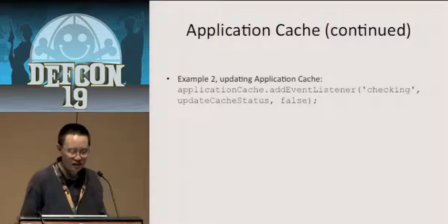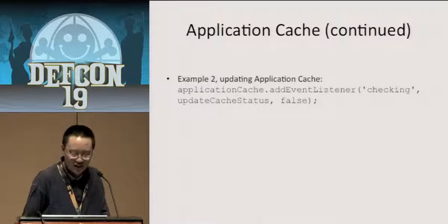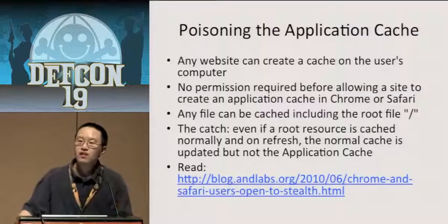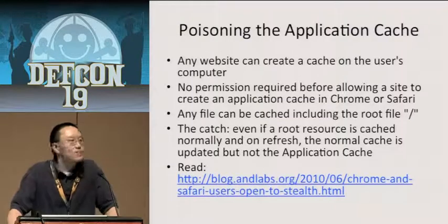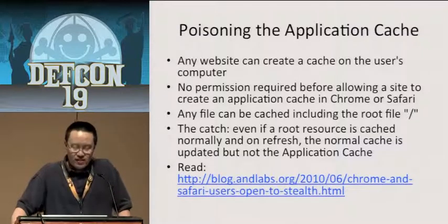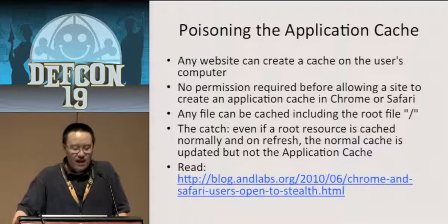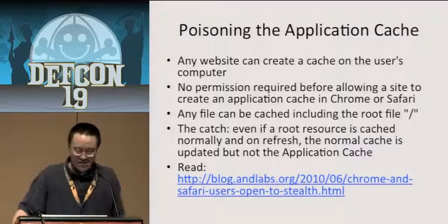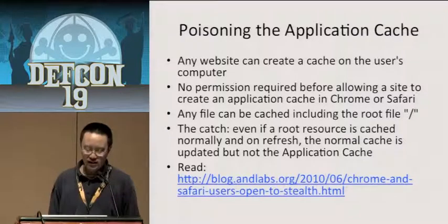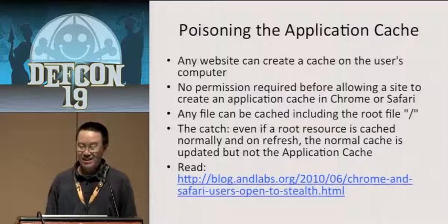To update the application cache, you add an event listener for the 'checking' event and write a function called updateCacheData. One of the danger points about the application cache is it can be poisoned. There's no permission necessary for any site to cache data onto the browser. What are you really caching? There's a real big catch: although the root resource is cached, the normal cache is updated but not the application cache.